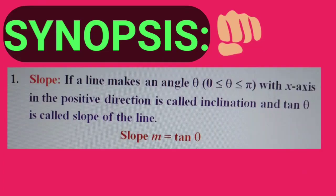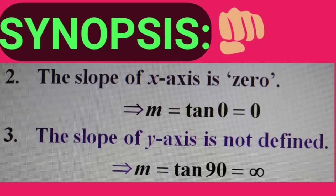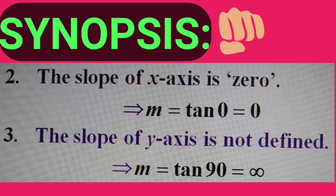First: slope. If a line makes an angle theta with the x-axis in the positive direction, it is called inclination, and tan theta is called the slope of the line. Therefore, slope m equals tan theta. The slope of the x-axis is zero. The slope of the y-axis is not defined.